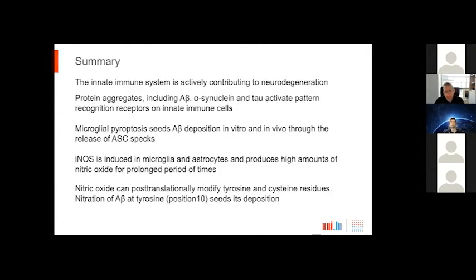In summary, I tried to convince you that the innate immune system is actively contributing to neurodegeneration. Protein aggregates, including amyloid beta, alpha-synuclein, and tau, activate pattern recognition receptors present on innate immune cells. Microglia pyroptosis seeds amyloid beta deposition in vitro and in vivo through the release of ASC-specks. iNOS is induced in microglia and astrocytes and produces high amounts of nitric oxide for prolonged periods of time. Nitric oxide released in an iNOS-dependent fashion can post-translationally modify tyrosine and cysteine residues. Today, for this aggregation issue, I showed you that nitration of amyloid beta at tyrosine-10 seeds its deposition.